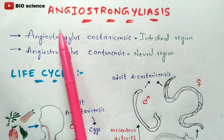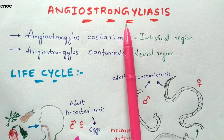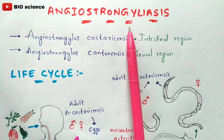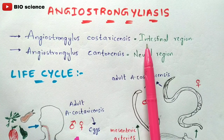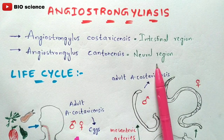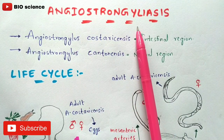In this video we are going to discuss about a disease called angiostrongyliasis. This is a disease commonly seen in human beings and it causes damage to two regions: the intestinal region and the neural region — that is, the central nervous system region — which will get damaged once a person is infected with this disease.